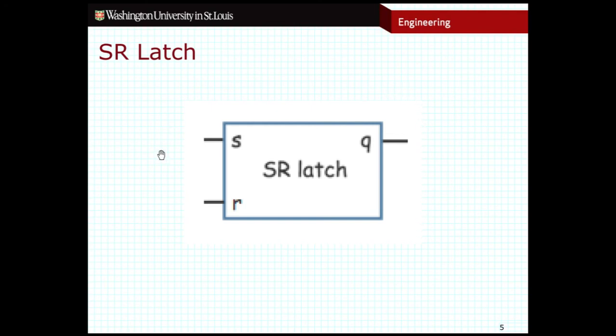but you are also welcome to use a component diagram that looks something like this, where I have my S bit coming in and my R bit coming in and my Q bit coming out. Sometimes you will see an additional output down here called Q naught, which again, remember, is the inverse of the Q output.